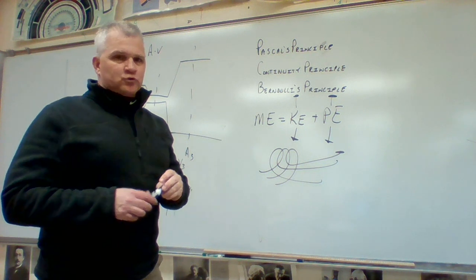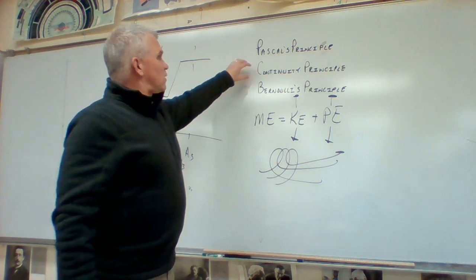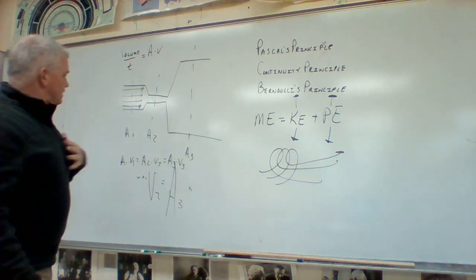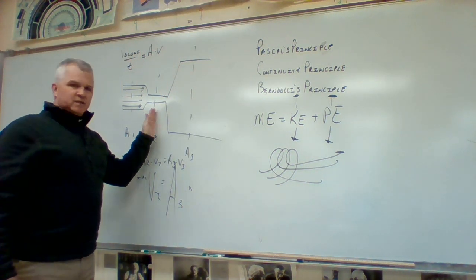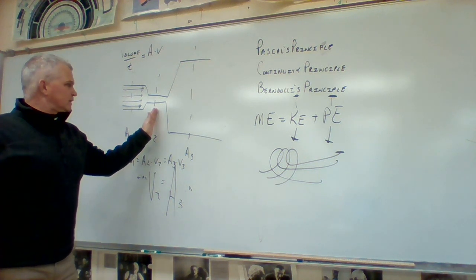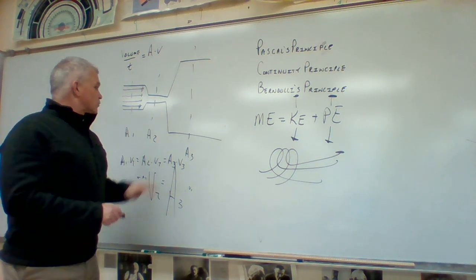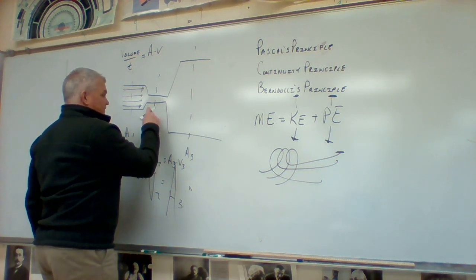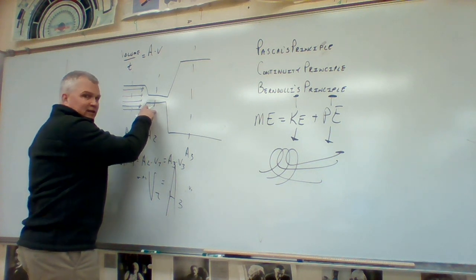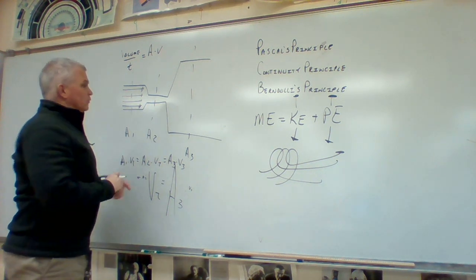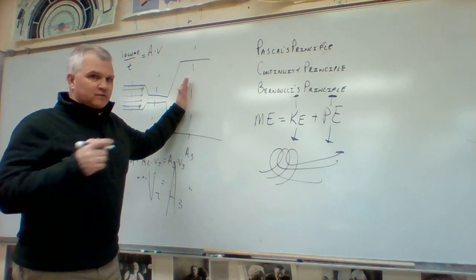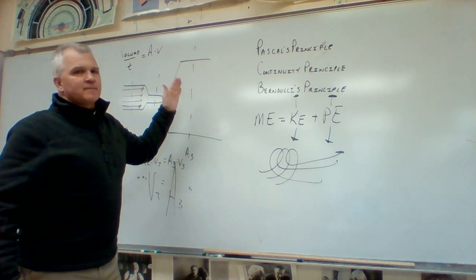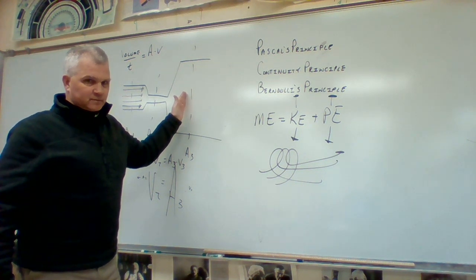What happens if we look at that in terms of pressure? Now we're moving from the continuity principle to Bernoulli's principle. When the fluid goes from region one to region two it speeds up, and as the speed increases, the internal pressure decreases. So region two has the fastest velocity but the least amount of pressure. Over in region three, the velocity decreases, so the pressure increases — slowest velocity, greatest internal pressure.